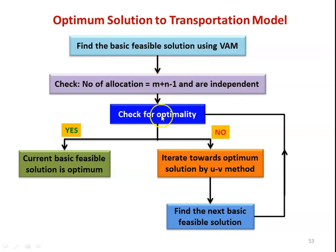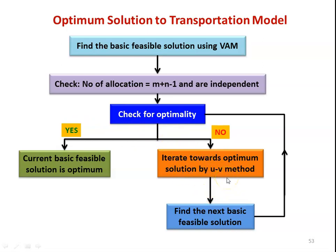We have to check for optimality. If the condition for the test is satisfied, then the current basic feasible solution is optimal. If the condition is not satisfied, then we have to iterate towards the optimum solution using the UV method. The UV method is the mathematical technique developed to find the optimum solution for the transportation model.